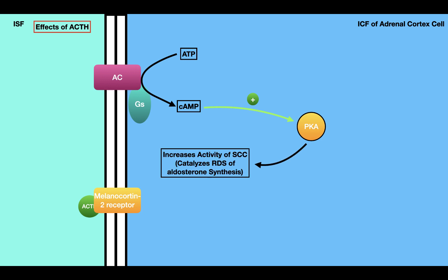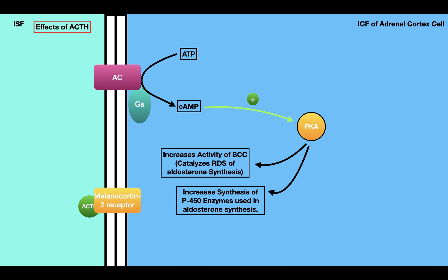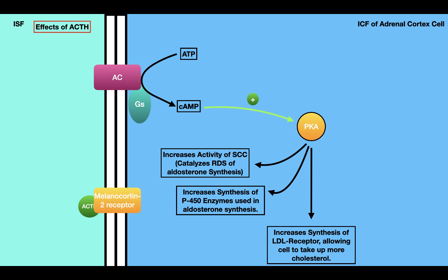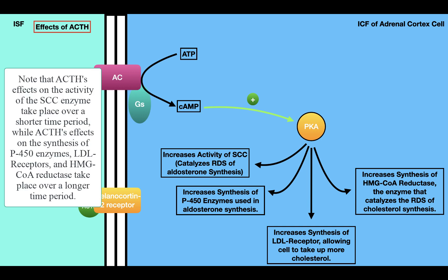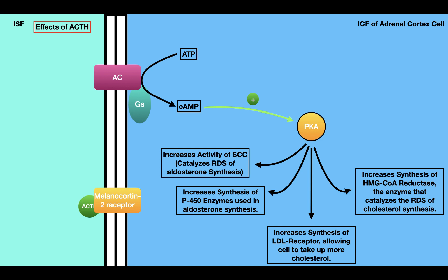Protein kinase A has several effects. First, it increases the activity of the SCC enzyme, which catalyzes the rate-determining step of aldosterone synthesis. In addition, protein kinase A increases the synthesis of different enzymes used in aldosterone synthesis. It also increases the synthesis of the LDL receptor, allowing cells to take up more cholesterol and synthesize more aldosterone. Lastly, protein kinase A increases the synthesis of HMG-CoA reductase — the enzyme catalyzing the rate-determining step of cholesterol synthesis — allowing the cell to produce more cholesterol and therefore more aldosterone. In summary, ACTH stimulates the adrenal cortex to synthesize and secrete aldosterone.